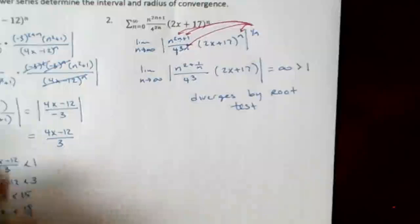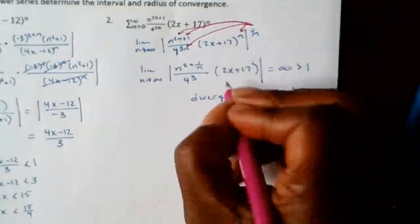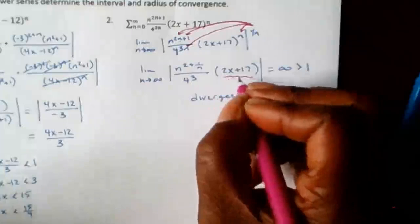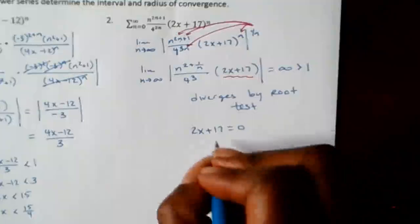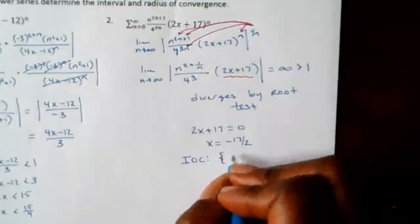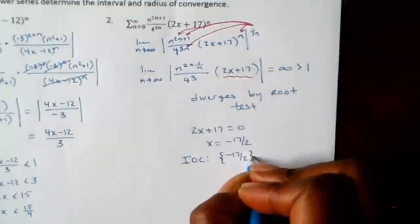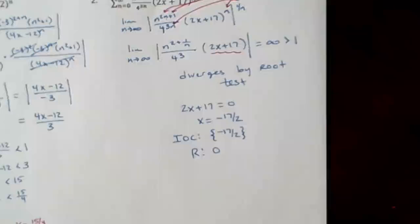I could have used the ratio test too — I'm just showing how the root test works. Since this diverges, the only place it converges is at the center: set 2x + 17 = 0, giving x = -17/2. The interval of convergence is the single point {-17/2} with radius 0. No endpoint checking needed since there's no interval.